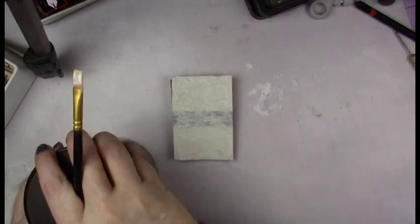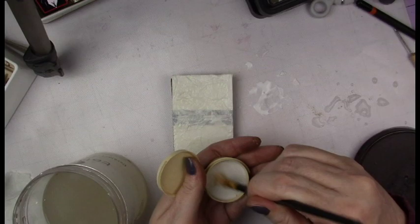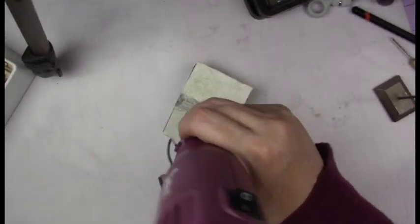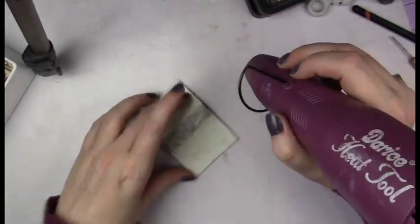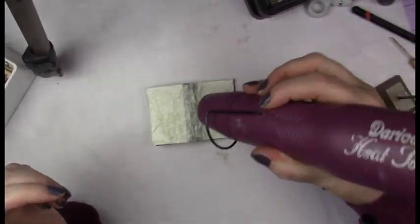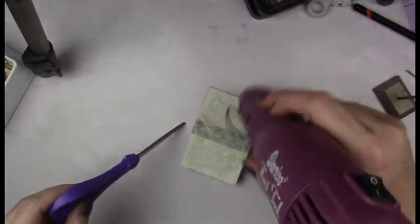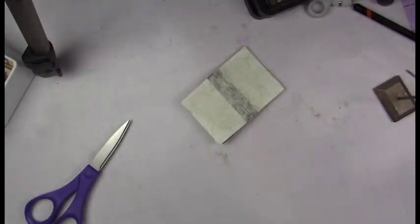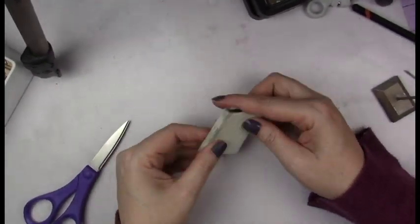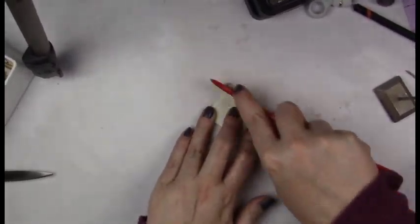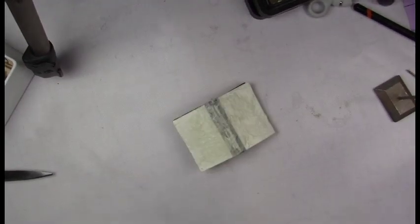This Mod Podge and tissue technique makes the outside of the book nice and firm. I'm using my heat gun to heat it up and dry the Mod Podge, and sort of creasing it so it gives it like a book binding look.